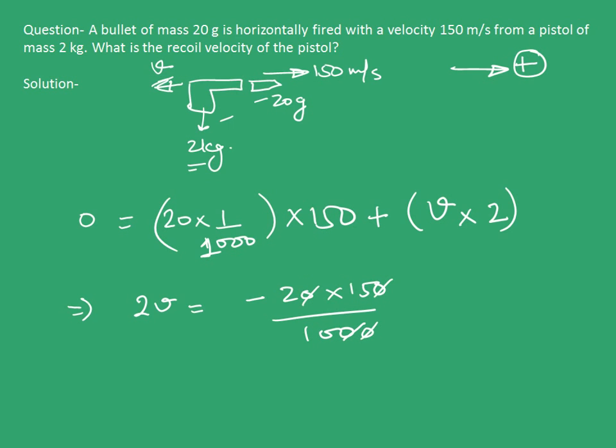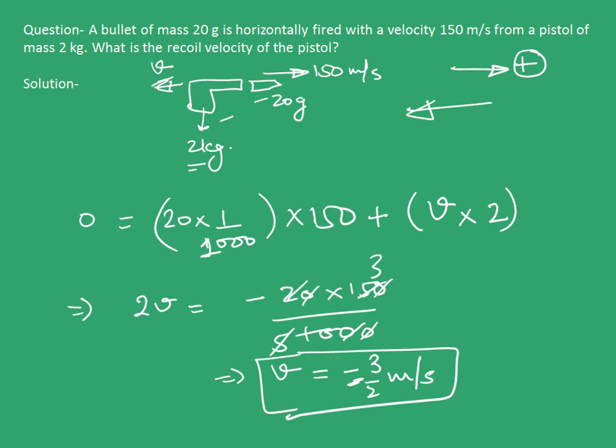This equals 3, which implies velocity V equals minus 3/2 m/s. What does this negative sign signify? The negative sign signifies that velocity is in direction opposite to which the bullet was fired, that is, the left direction. We can also see that the velocity of recoil is very less compared to velocity of bullet. With this, we conclude this chapter on force and laws of motion. Thank you.